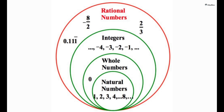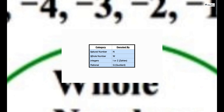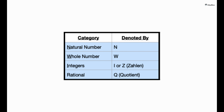But there are still many numbers left, right? Like half, one third, and minus five by seven. What about them? Well, if you take all such missing numbers along with the integers, then these are collectively known as the rational numbers, and these are denoted by capital letter Q. Now, if you are wondering what all these letters mean, here's a table to help you with that.